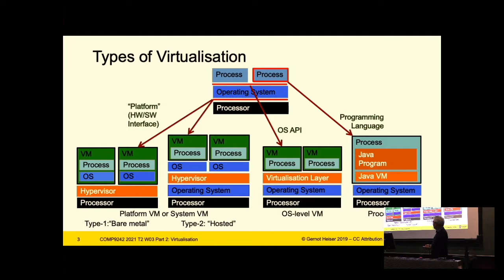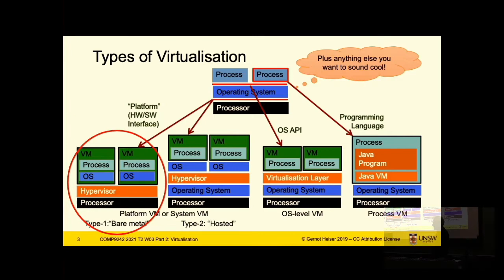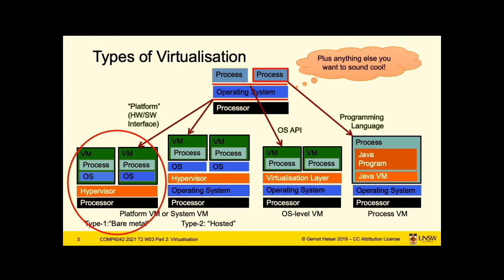I'm not going to talk about any of these other types — I'm only talking about platform virtualization. These days people call everything virtualization because it's a cool term, but we're going to focus on platform virtualization, in particular type 1 — virtualizing at the hardware-software interface with the hypervisor running on bare hardware.